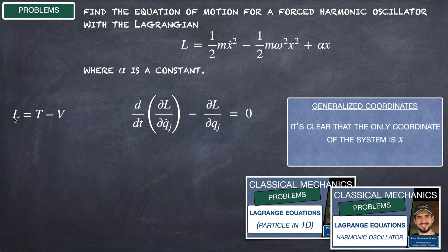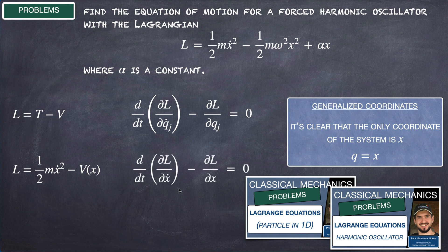This is the Lagrangian function: kinetic energy minus potential energy. It is clear that the only coordinate of this system is x, so instead of q we are going to use x. The Euler-Lagrange equation that we need to solve is this one.